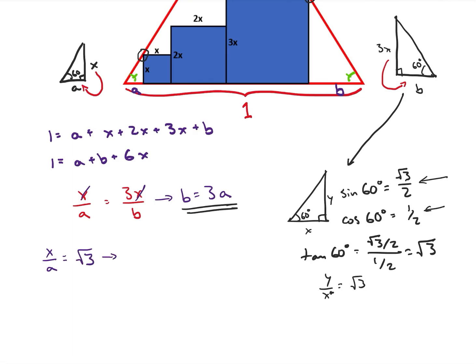So what does that tell me? That tells me that x over a is going to be equal to square root of 3, which tells me that a is equal to x over the square root of 3. So this is a pretty good start. So b is equal to 3 times a, so b is going to be equal to square root of 3 x.